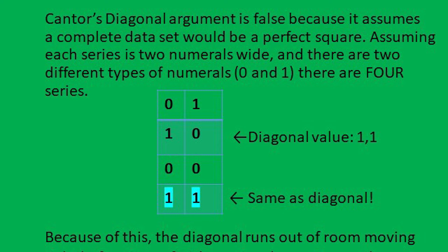And look here. A complete dataset using only 0 and 1 as integers, that is 2 integers wide, is actually 4 number series long. And the data series at the bottom of that list is actually a copy of the value created by the diagonal, 1,1.